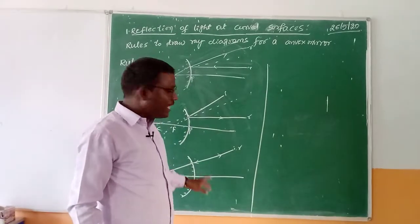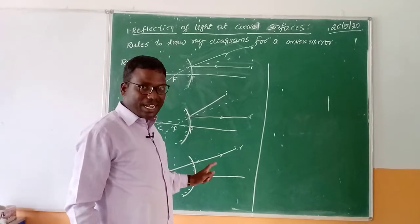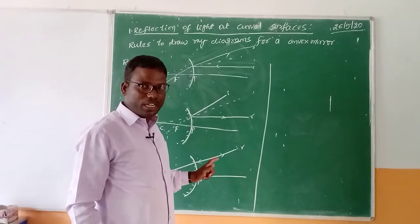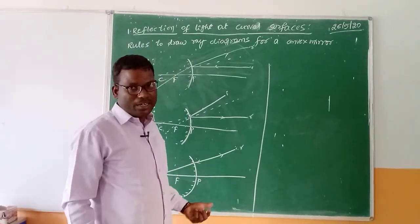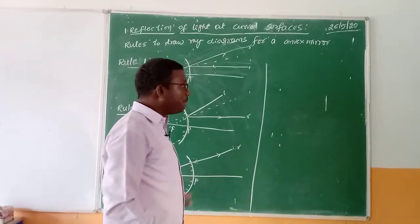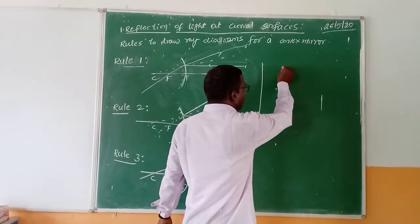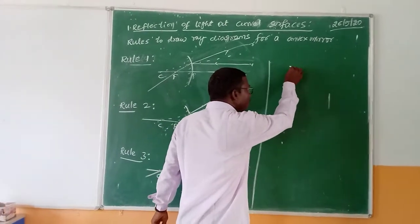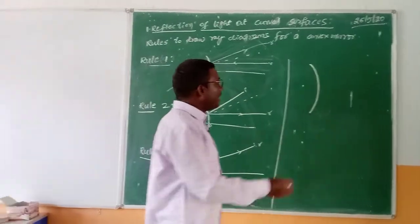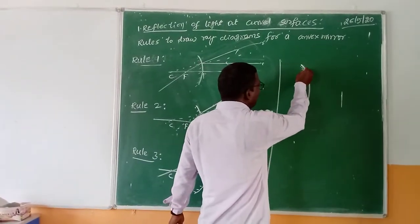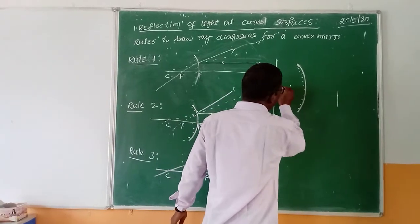Now we have Rule 1, Rule 2, and Rule 3. We are going to learn how to draw the ray diagram for a convex mirror. As you know, the convex mirror always forms a virtual, erect, and diminished image inside the mirror — that is, behind the mirror.